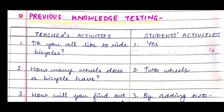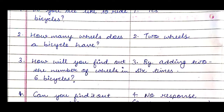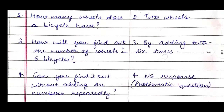We will create two columns. On the left side we will write teacher's activities, and on the right side we will write students' activities. Teachers ask questions based on previous knowledge and students answer them, which will eventually lead to our topic. First question: 'Do you all like to ride bicycles?' Students will say yes. Next question: 'How many wheels does a bicycle have?' They will say two wheels. Then: 'How will you find out the number of wheels in six bicycles?' Since they don't know multiplication yet, they will answer by adding two six times.